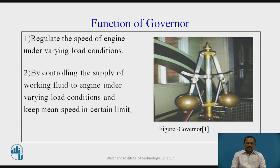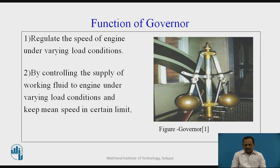Hence, the governor automatically controls the supply of working fluid to the engine under varying load condition and keeps the mean speed within a certain limit. In other words, when the load on the engine increases, the configuration of the governor changes and the valve is moved to increase the supply of working fluid. Similarly, when the load decreases, the speed increases and the governor decreases the supply of working fluid to the engine.